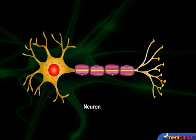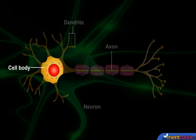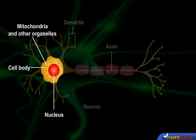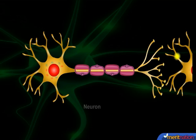A neuron has three main parts: dendrite, cell body, and axon. The dendrite receives information from the previous cell and conducts it towards the cell body. The cell body contains the nucleus, mitochondria, and other cell organelles, and takes care of the maintenance and growth of the cell. The axon conducts messages away from the cell body towards the next dendrite.